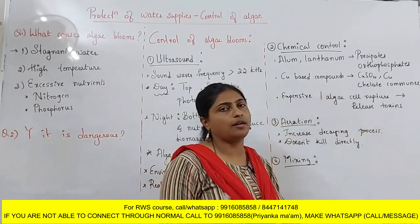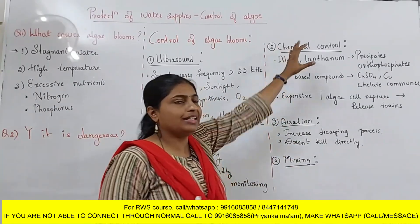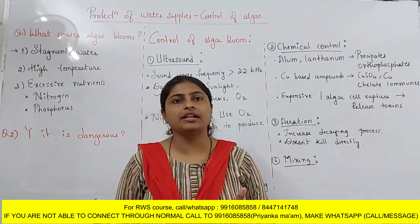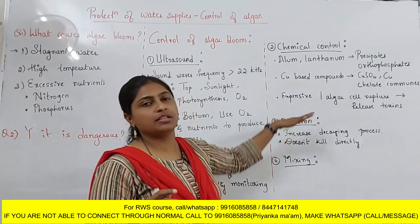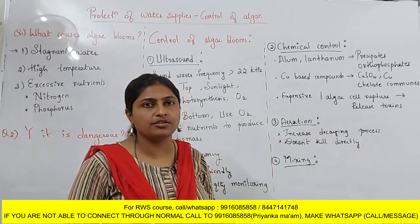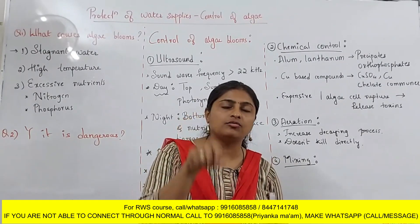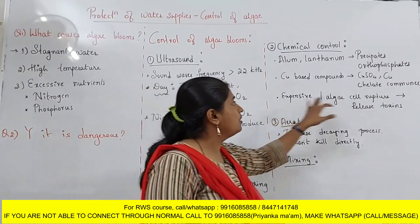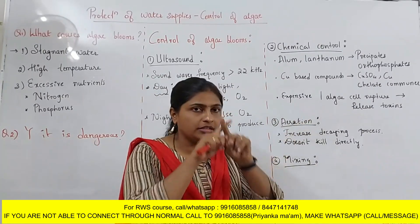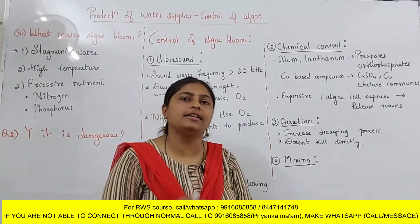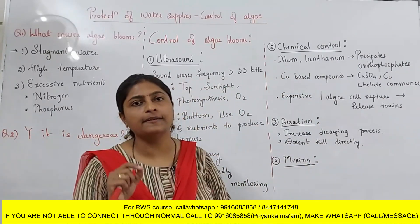Along with these, certain copper-based compounds are also added, like copper sulphate and copper chelate. However, all these chemicals are a little expensive. You are using this method for millions of liters of water, so this method is very costly. One disadvantage is that when you use this chemical, the algae cell ruptures and the toxin present in the algae is released out, which affects other aquatic animals.